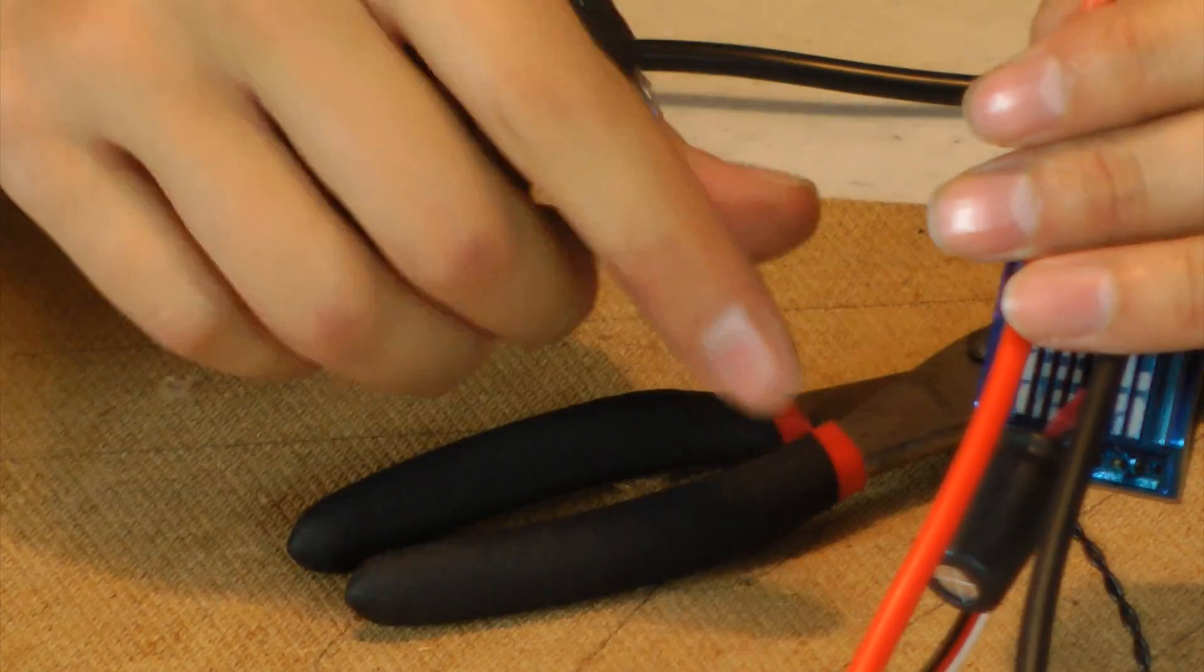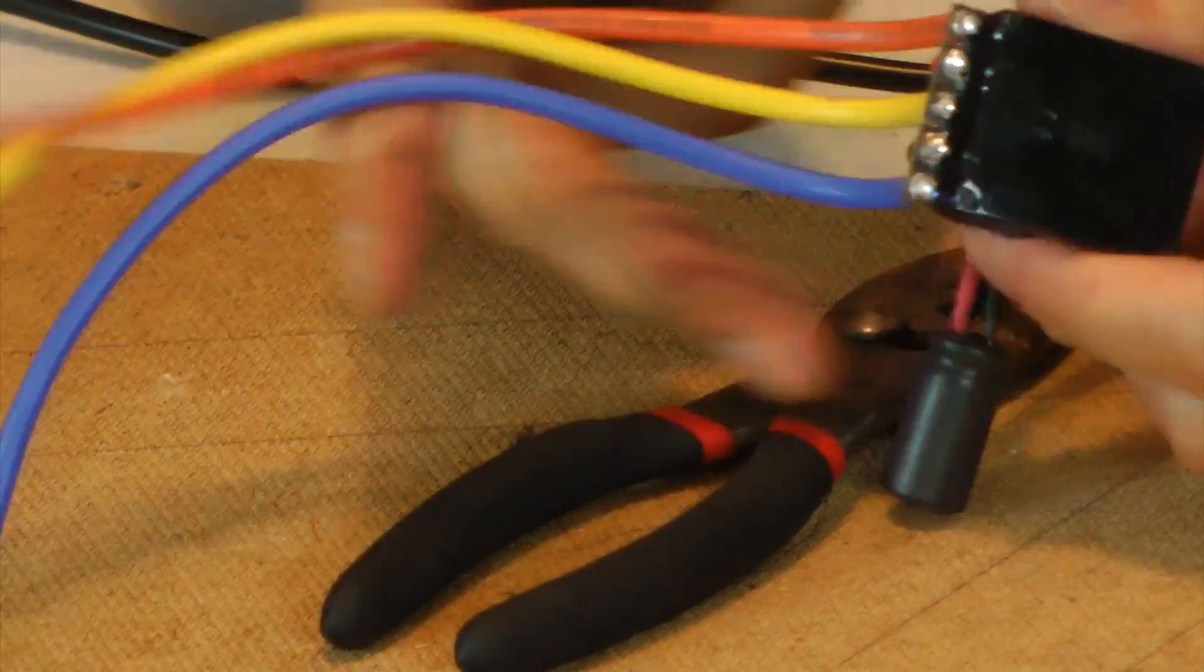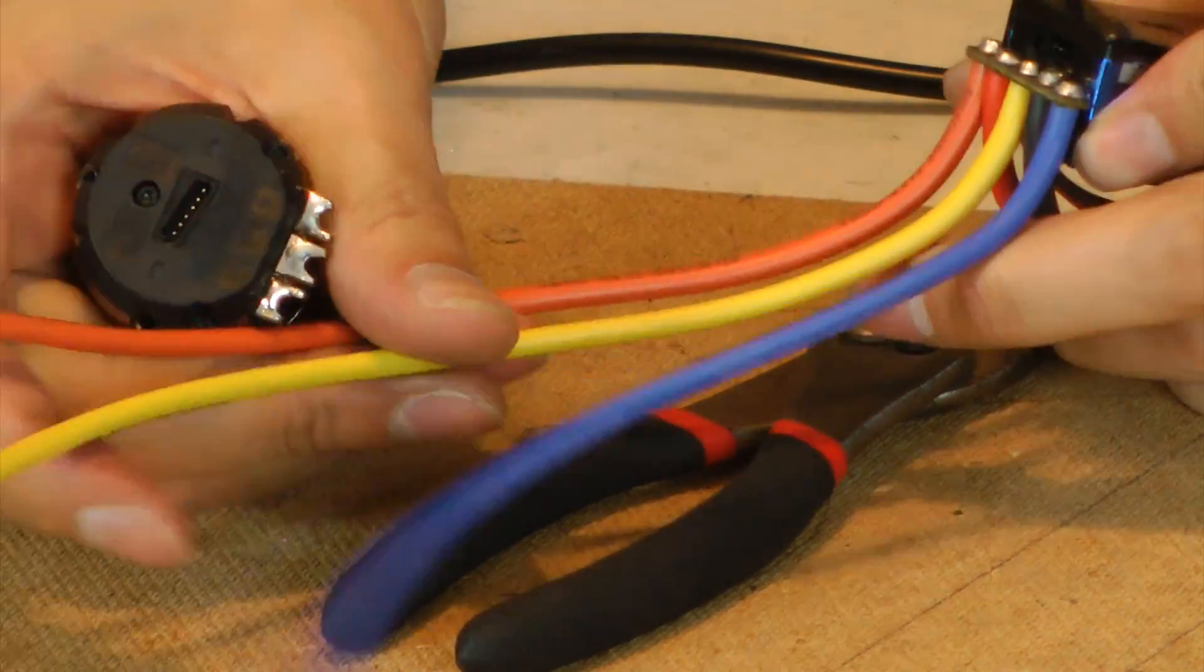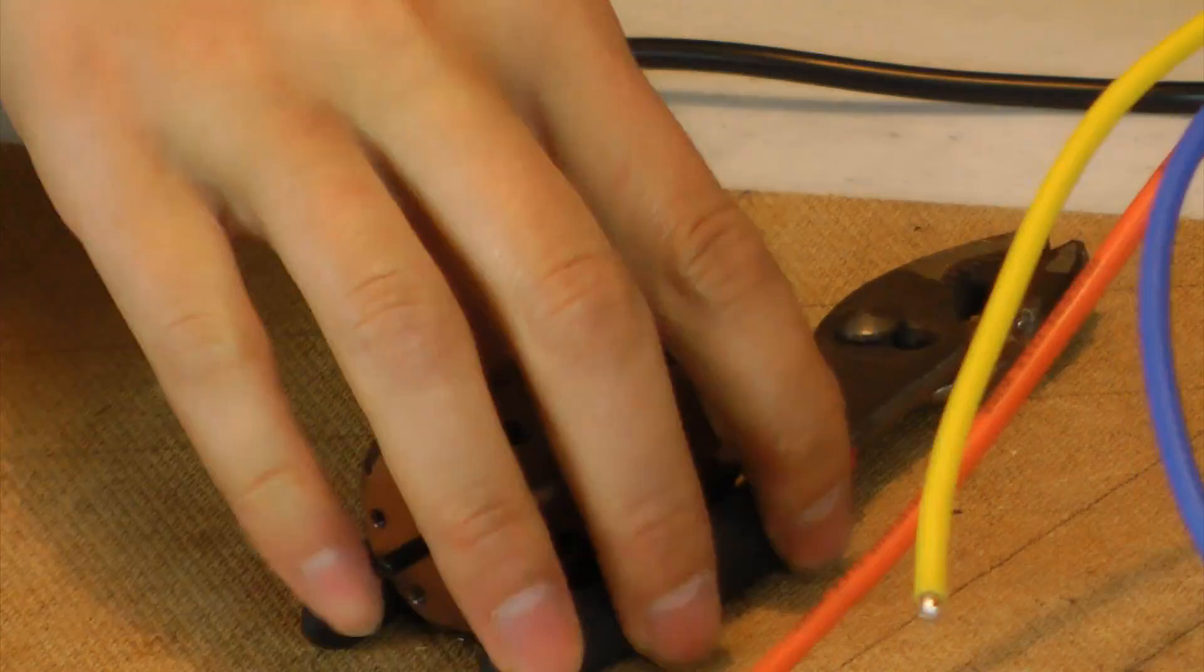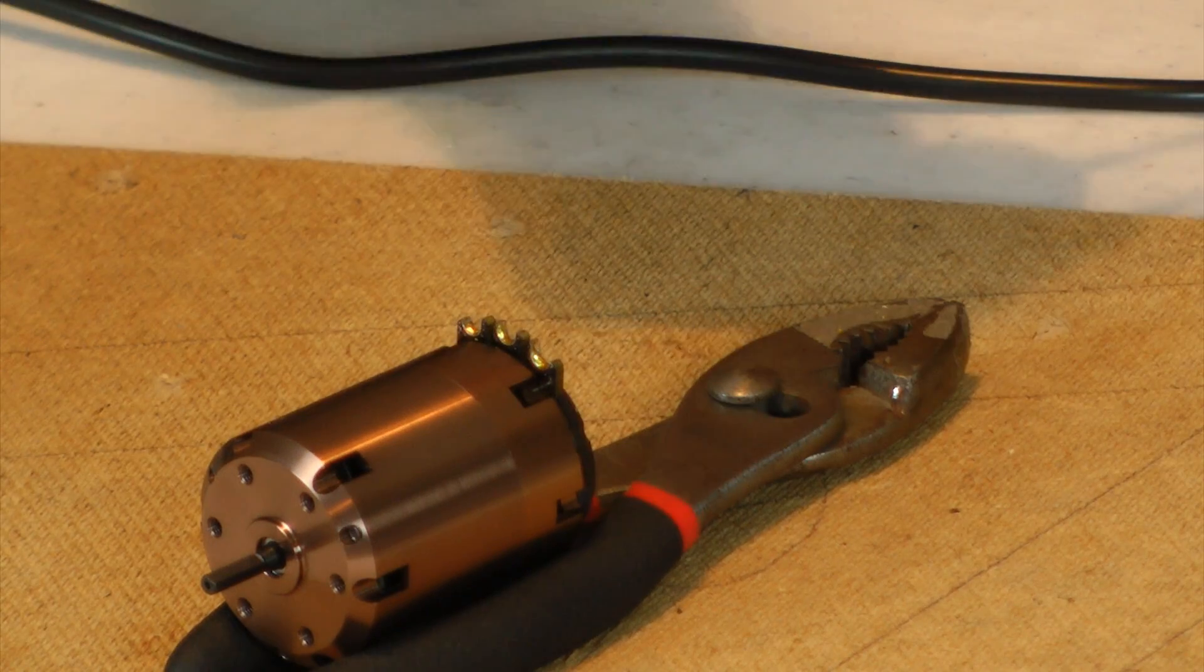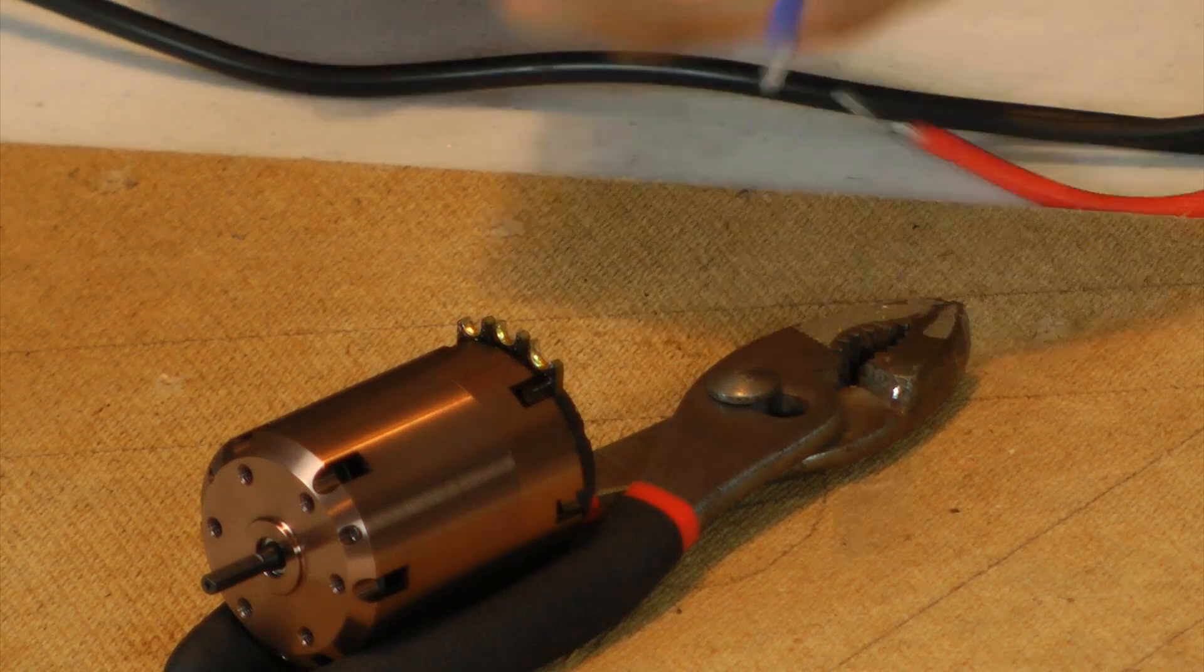So because of the way it's oriented like that, I'm actually going to turn the ESC upside down like this, so that I have A, B, C going into the motor this way.